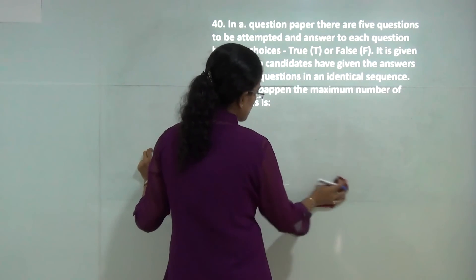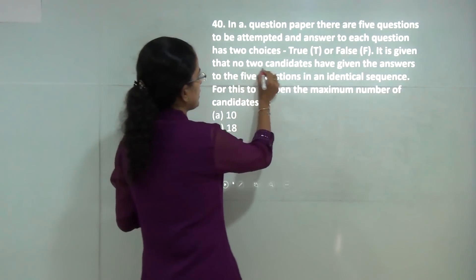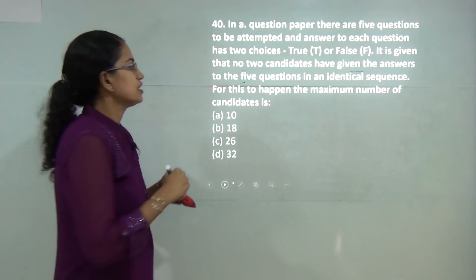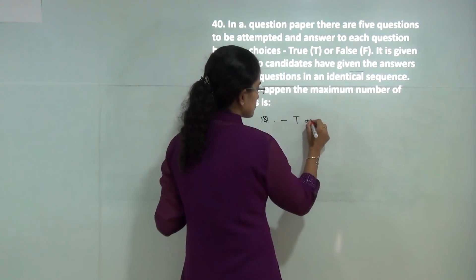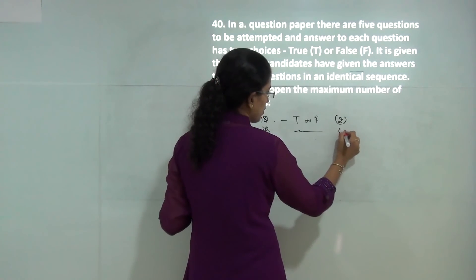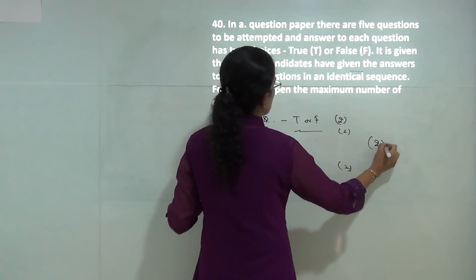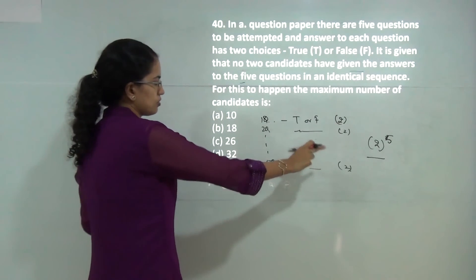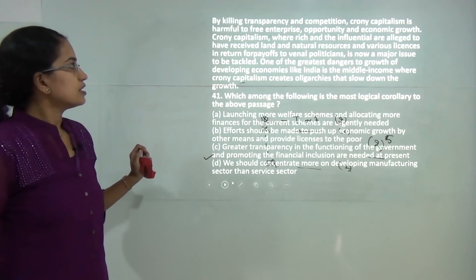This question is about permutation, not combination. No two candidates can have the same answers. For the first question you can have 2 options — true or false — and similarly for each of the 5 questions. So the maximum number of candidates could be 2 raised to the power 5, because you have 5 questions each with 2 options. That gives 32, which is the correct answer.